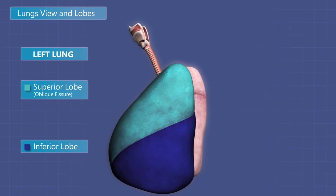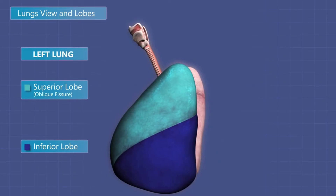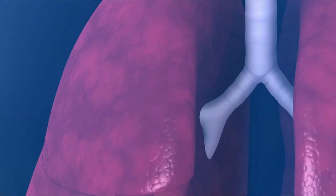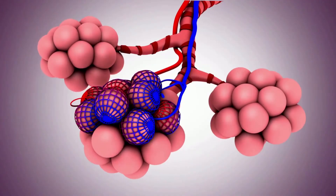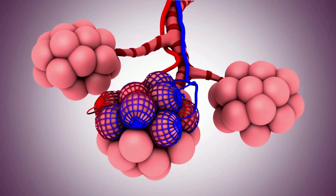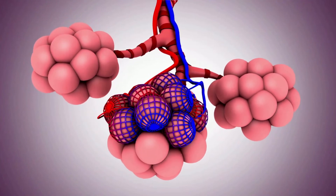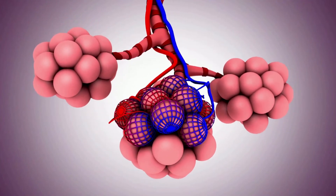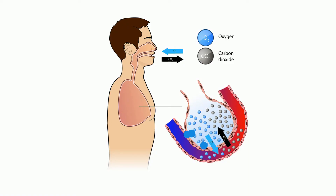Back to the alveoli. Each alveolus is surrounded by a capillary. This is where the magic happens. At the capillary, oxygen diffuses out of the alveoli and into the blood, and carbon dioxide diffuses out of the blood and into the alveoli.